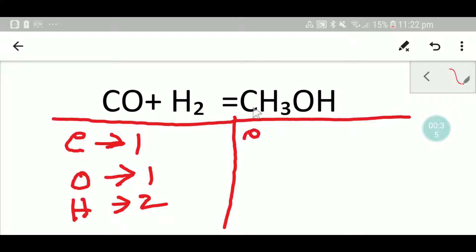On the right-hand side we have one carbon, we have three plus one, that is four hydrogen, and we have one oxygen. Now we'll balance the number of carbon, oxygen, and hydrogen. Carbon: one to one, so carbon is already balanced. Oxygen: one to one, so oxygen is already balanced. Here we have two hydrogen and four hydrogen, so we need to balance hydrogen.